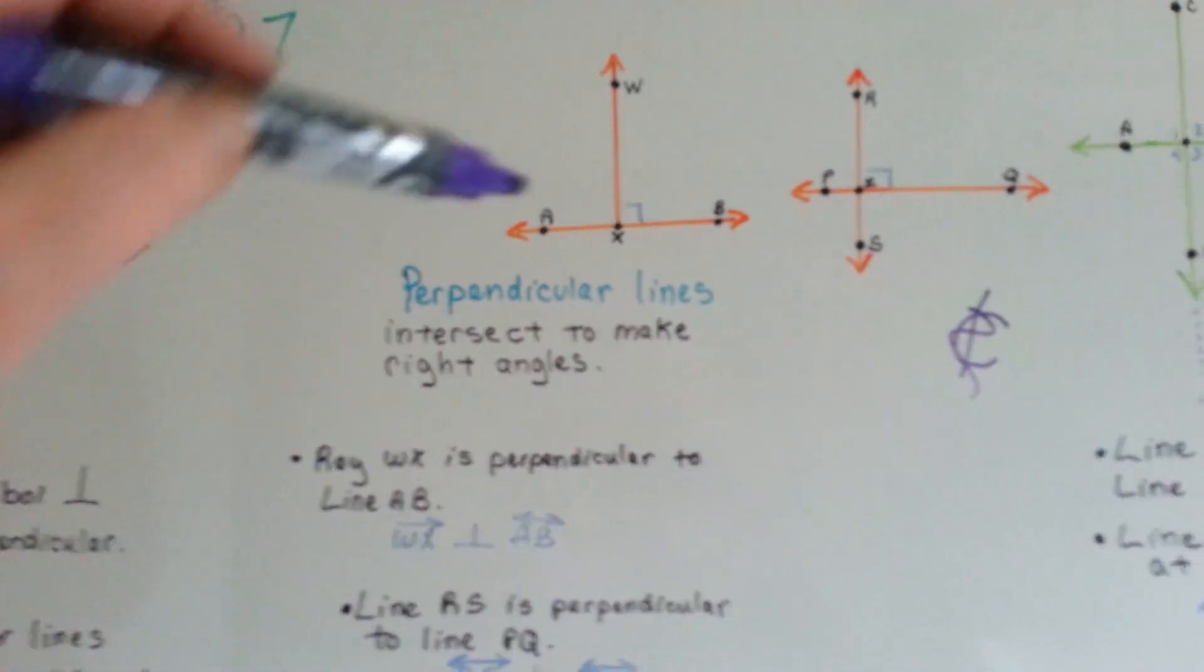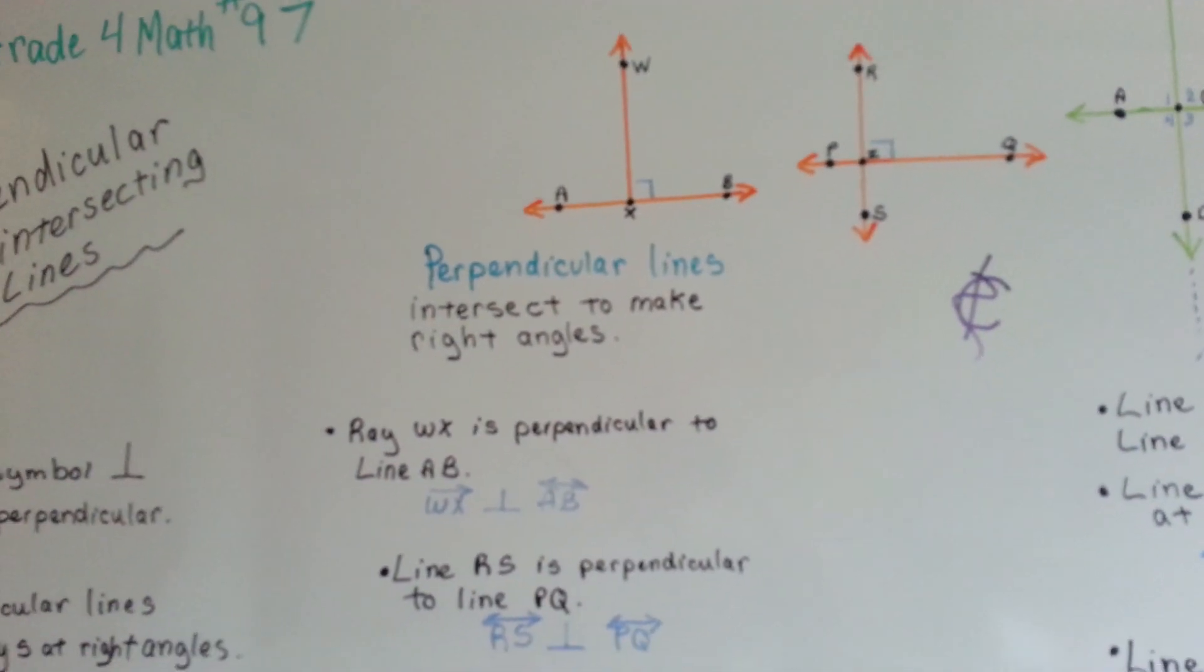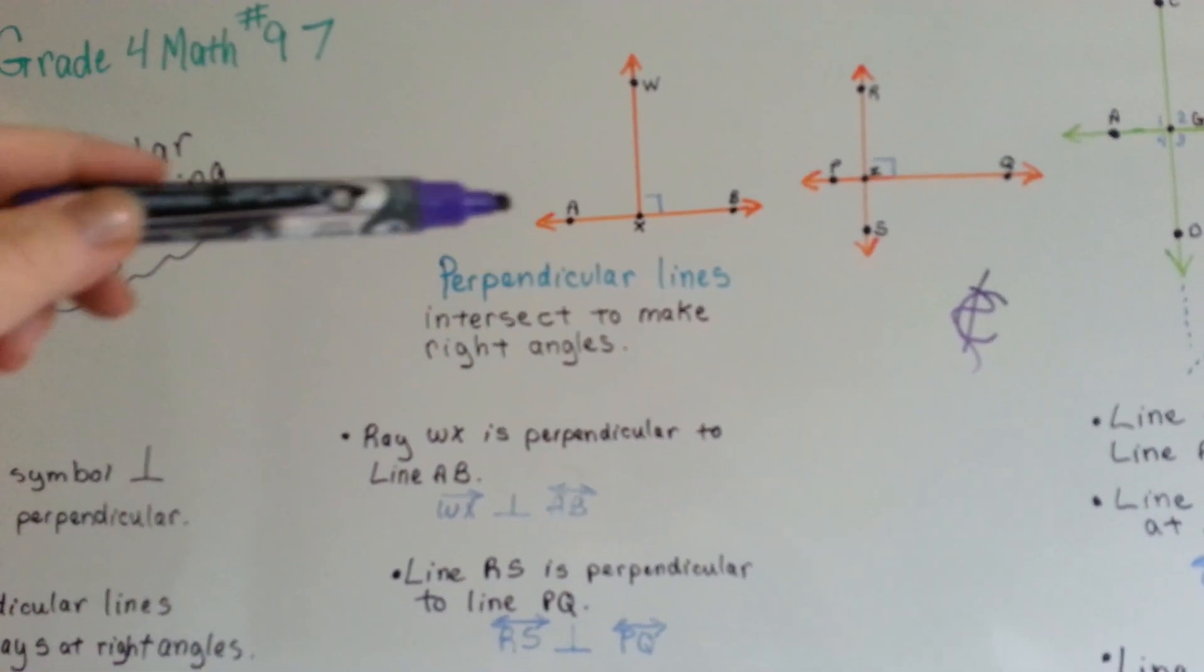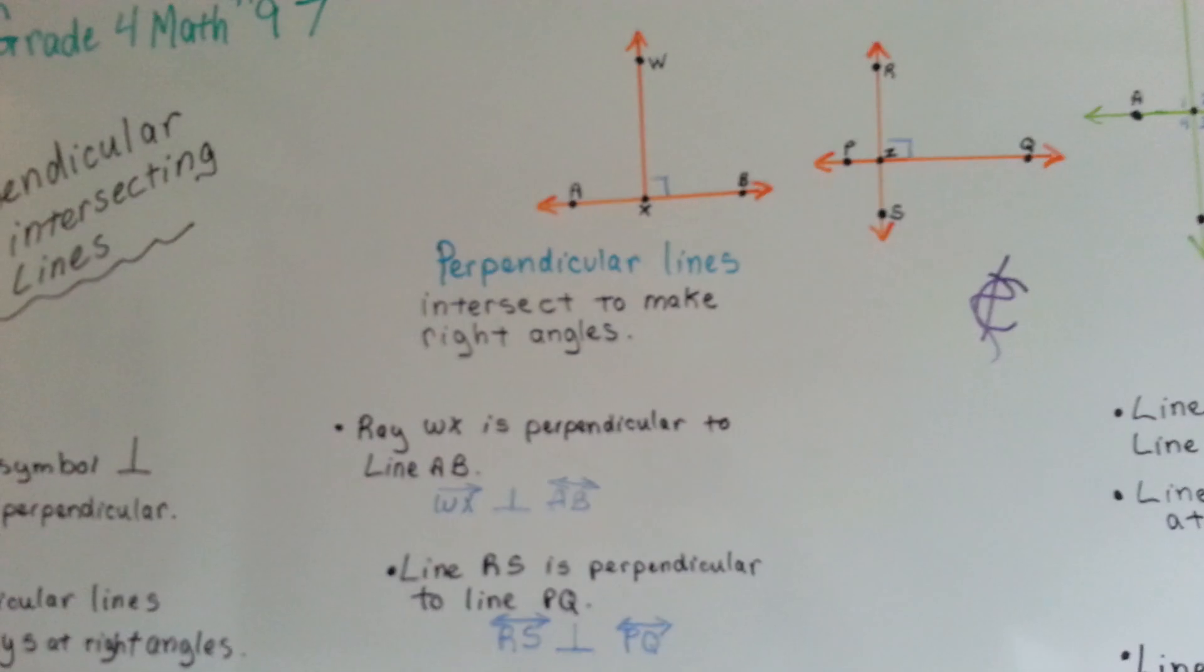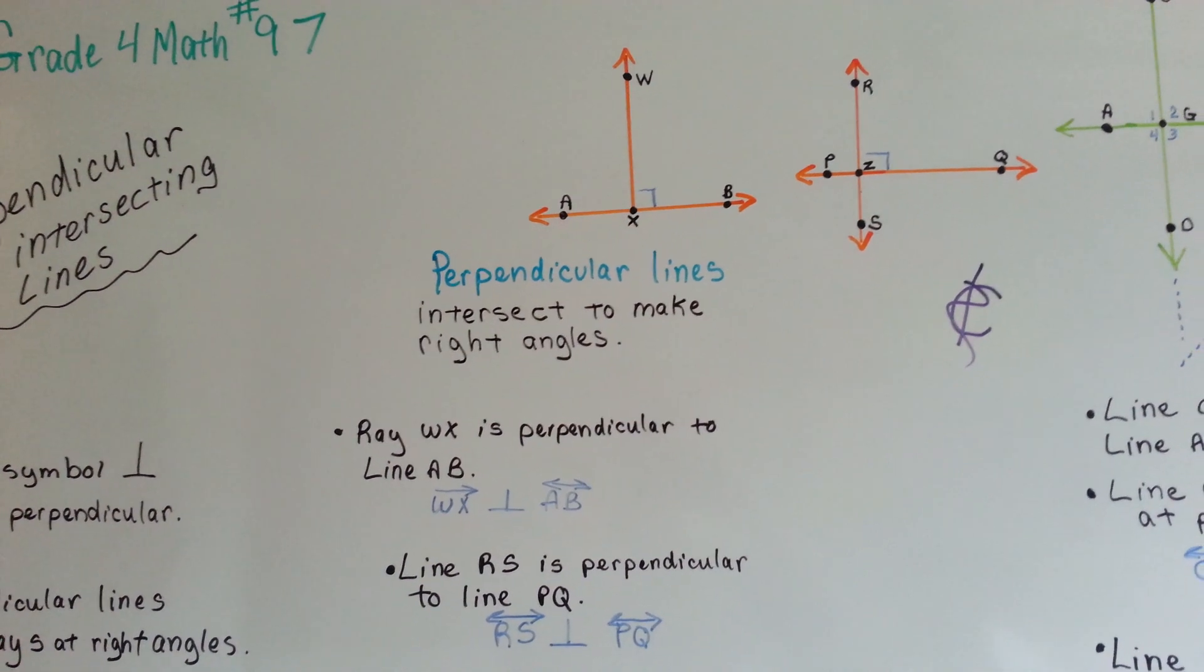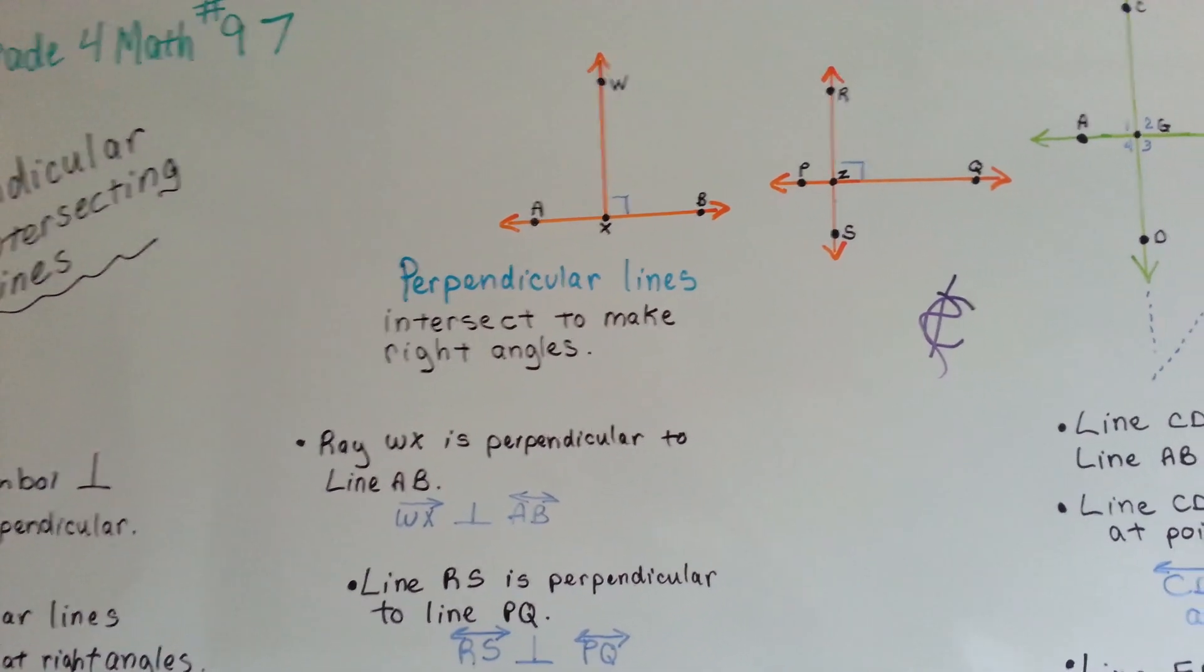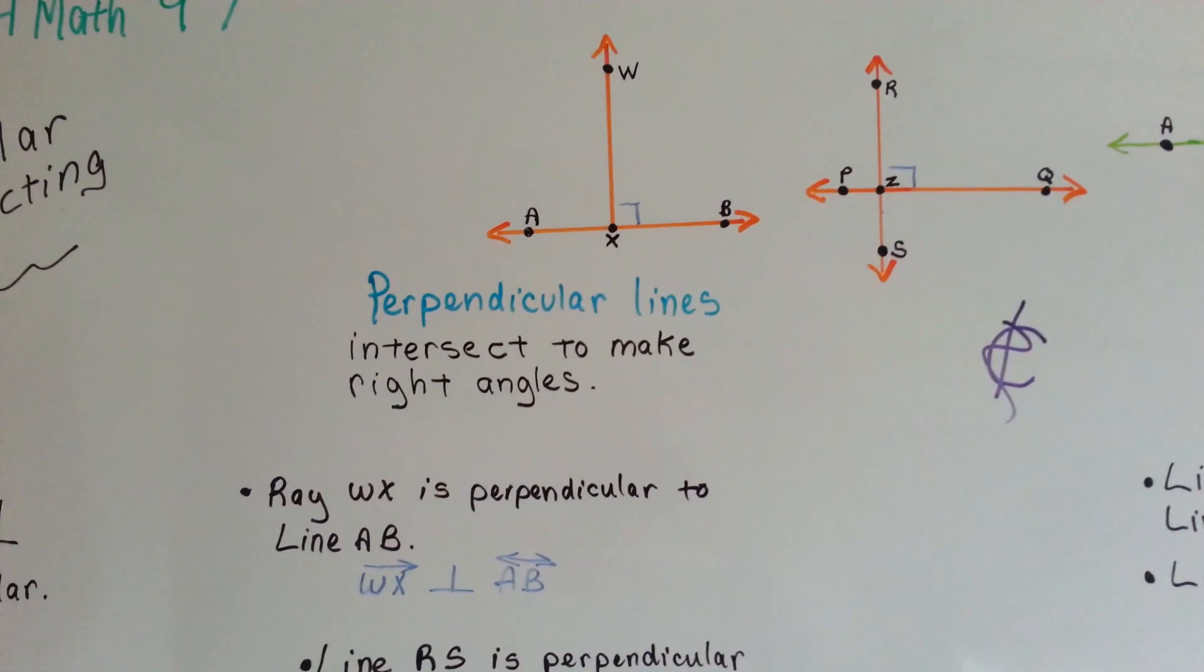If we were to look at these two orange ones, we'd say ray WX, yes, this is a ray, because it doesn't continue below line AB. Okay, sorry about my focus there. Ray WX is perpendicular to line AB.